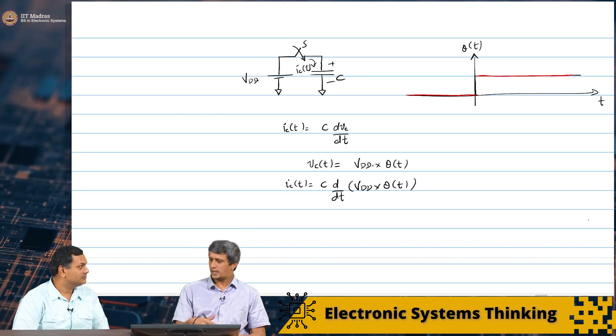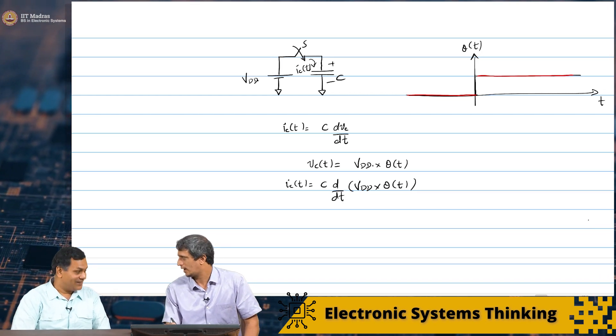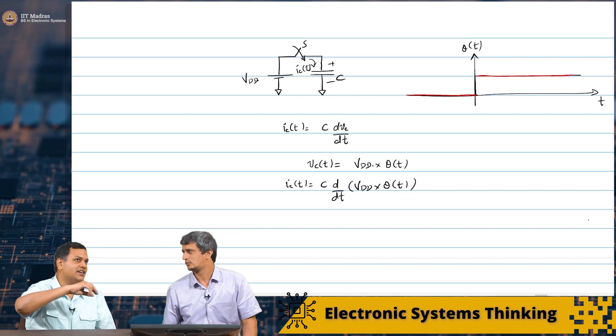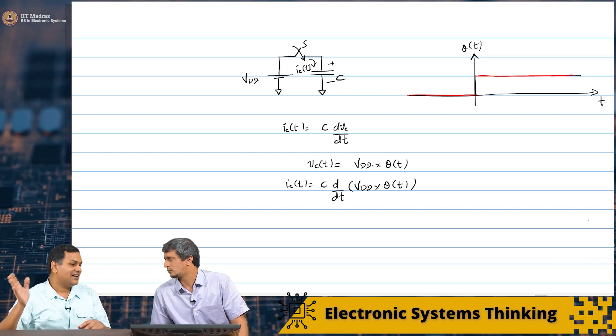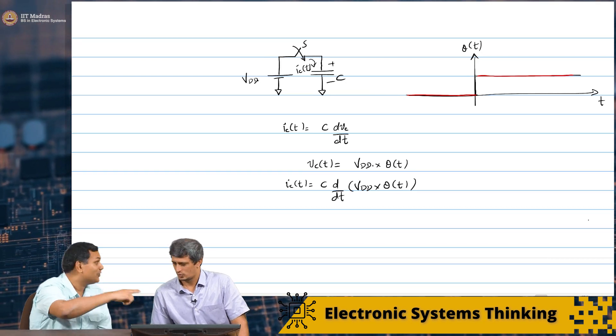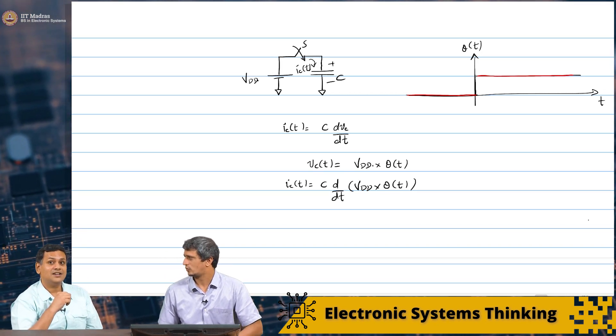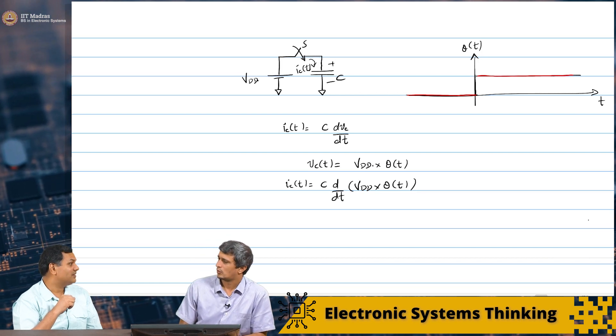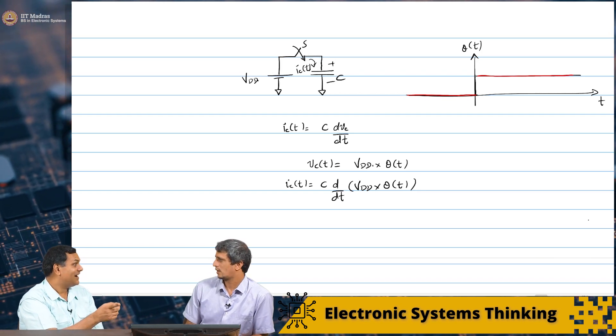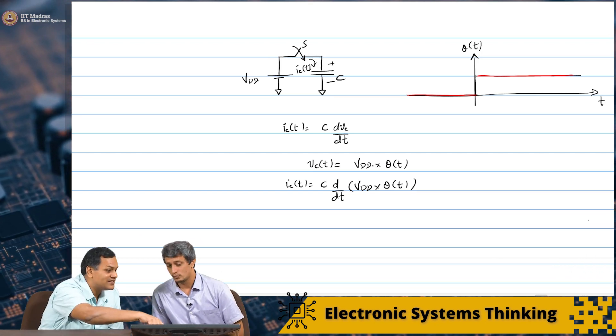Exactly. Right. So, if you look at Vc of t. Because you said Vc of t is Vdd times theta of t. Correct. So, it is 0 and then it is Vdd. So, this is known. Yes. So, it looks like it just steps suddenly from 0 to Vdd at t equal to 0 with an infinite slope. With an infinite slope. That is right.